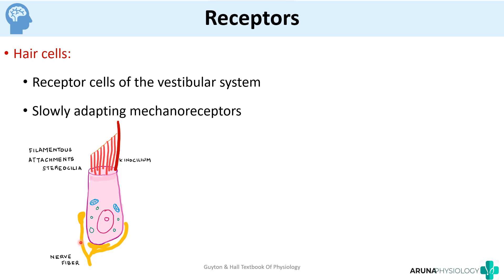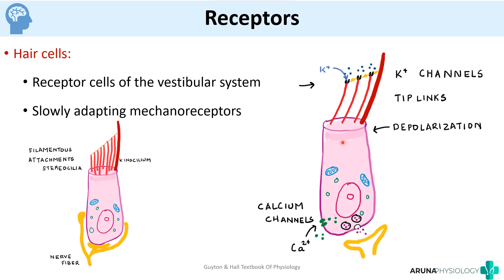The mechanism of depolarization is explained in detail in the semicircular canals video. Briefly: when the kinocilium moves in one direction, the stereocilia also move towards the kinocilium. On top of the stereocilia there are potassium channels linked to each other by tip links. When the stereocilia move towards the kinocilium, the potassium channels open, causing an influx of potassium which leads to depolarization of the cell. When the cell is depolarized, calcium channels open, leading to release of neurotransmitter which sends impulses to the nerve fiber. If the direction is opposite, there will be hyperpolarization. This is how the hair cell converts a mechanical signal into a neural signal.